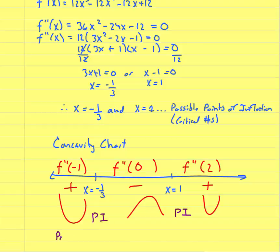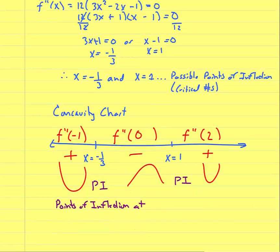Because I have a concavity change at x = −1/3 (positive to negative), that is a point of inflection. And at x = 1 (negative to positive), that is also a point of inflection. So I have two points of inflection. If the problem asks for ordered pairs, plug each x-value back into the original function to get the corresponding y-value.